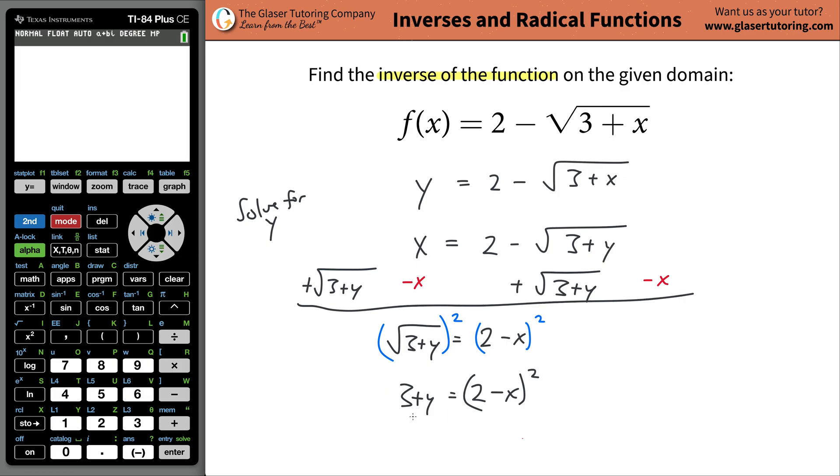And then all I'm going to do is solve this for y, that's what I'm doing the whole time. But now I'm going to just subtract three from both sides. We just simply subtracted three from both sides. So y is going to be equal to two minus x squared minus three.